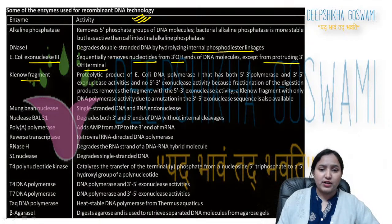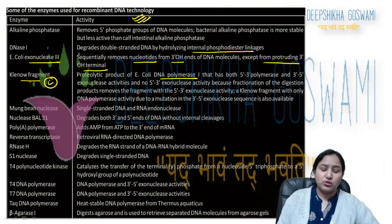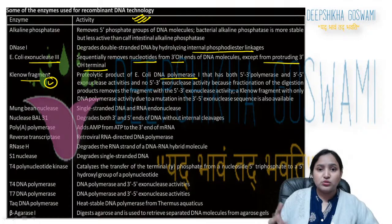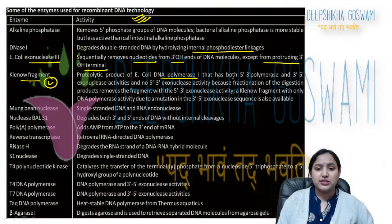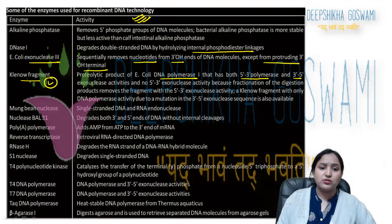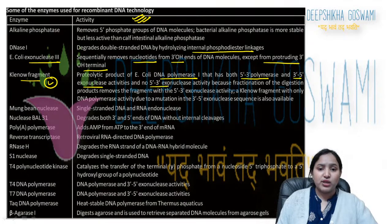The Klenow fragment is the large part of E. coli DNA Polymerase I. It has two activities: 5'→3' polymerase activity and 3'→5' exonuclease activity, but lacks 5'→3' exonuclease activity.